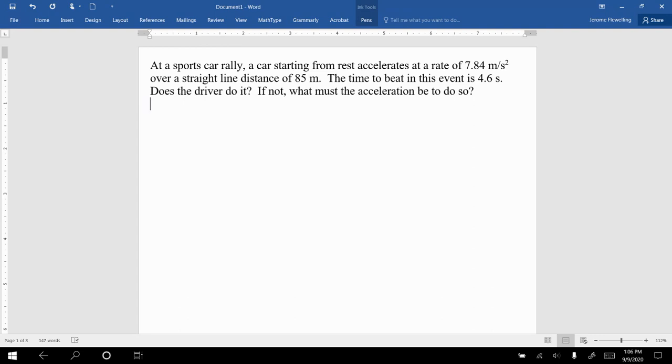Remember, for every problem, the first thing we're going to do is start with our givens. We know that meters per second squared is a measurement of acceleration, so our A value is 7.84 meters per second squared. We also know that the car has to travel a distance of 85 meters, so that's going to be our position, 85 meters.